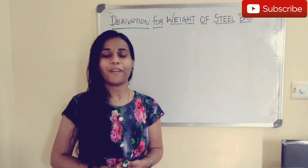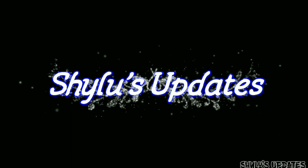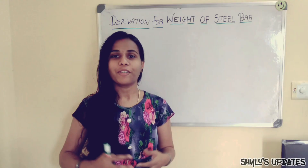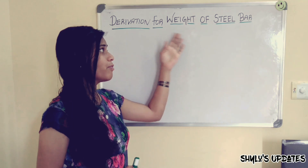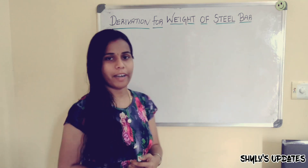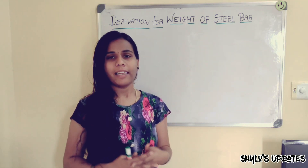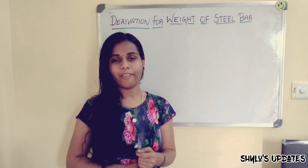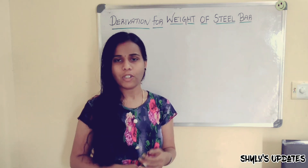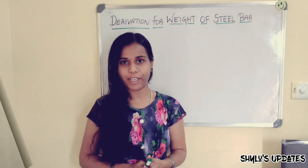Hello viewers, welcome to Shailu's Updates. Today we are going to learn about the derivation of the weight of steel bar formula. You know the formula for weight of steel bar — D square L divided by 162 kg. So how do we derive that formula? Let's see in this video.